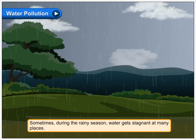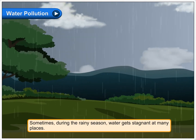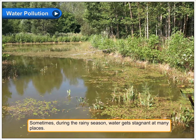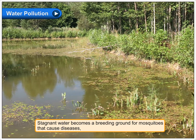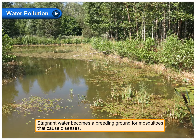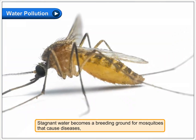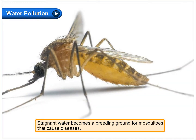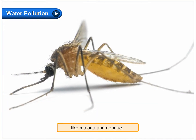Sometimes, during the rainy season, water gets stagnant at many places. Stagnant water becomes a breeding ground for mosquitoes that cause diseases like malaria and dengue.